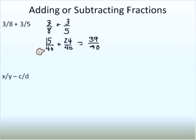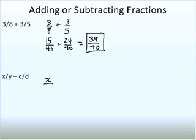We add our numerators and our denominator remains the same, so we get 39 fortieths. Now, if we look at just variables — we throw variables in there and suddenly we get confused — but it's still the same process. You want to find a common denominator if the denominators are not the same, which they are not: it's y and d.